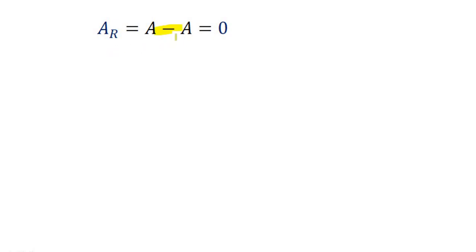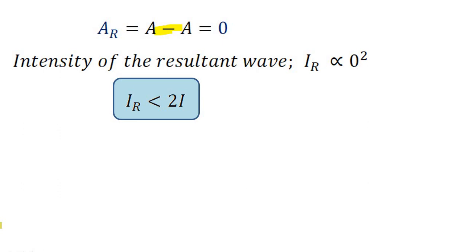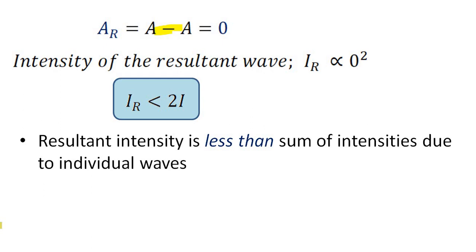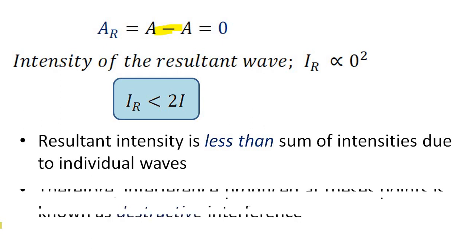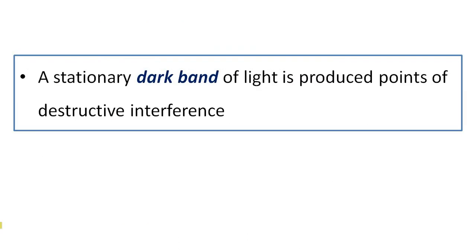Here we are taking the vector sum, so we need to consider direction also. Therefore the resultant amplitude will be equal to 0. As intensity is proportional to the square of the amplitude, the resultant intensity IR is proportional to 0² — so IR is 0. The intensity of the first wave is I and the intensity of the second wave is I, so the sum of the intensities is I plus I. But the resultant intensity here is 0, which is less than the sum of the intensities. Therefore, the interference produced at these points is known as destructive interference. A stationary dark band of light is produced at the points of destructive interference.